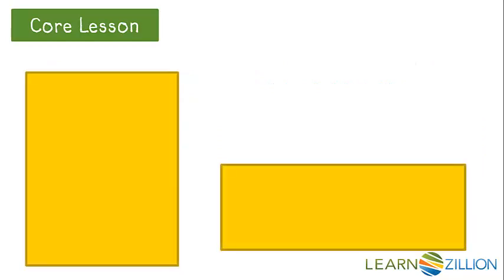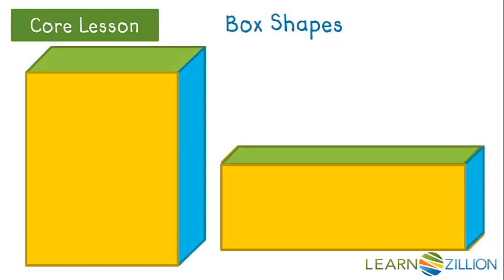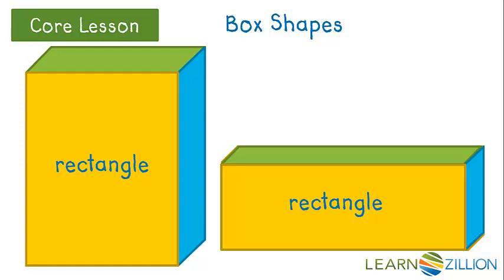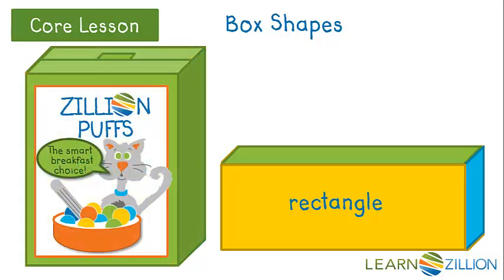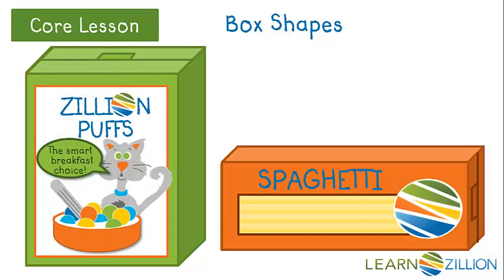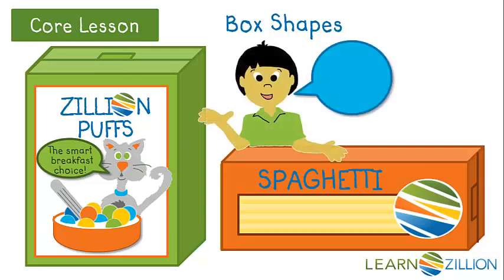If you put six rectangles together you can build a solid shape, also called a three-dimensional shape. These six rectangles can form a box. Look at the front of these boxes — you can see rectangles. These rectangles make up the faces of the boxes. If you have ever been to the grocery store you may recognize these box shapes, like a box of cereal or a box of spaghetti. A shape is a box shape if you can count six rectangles for faces.